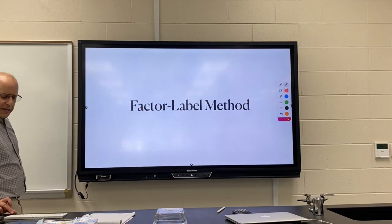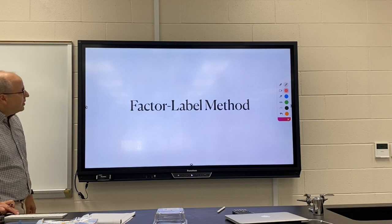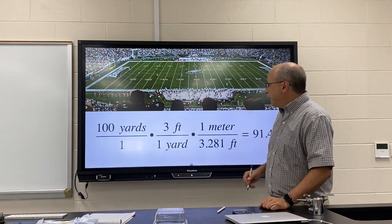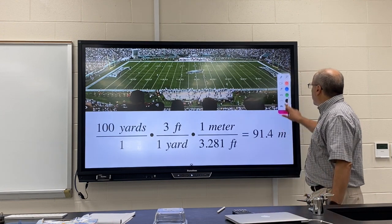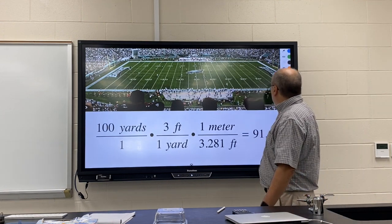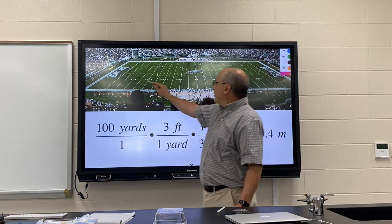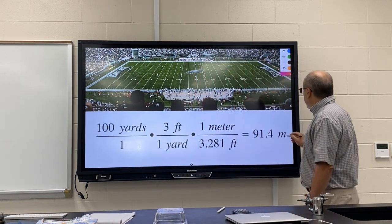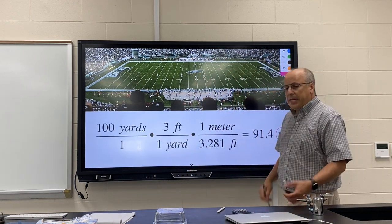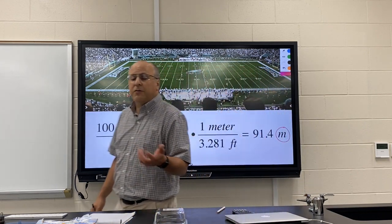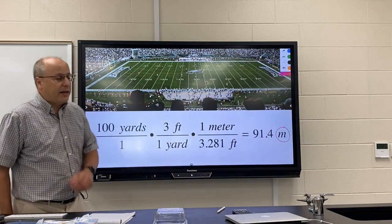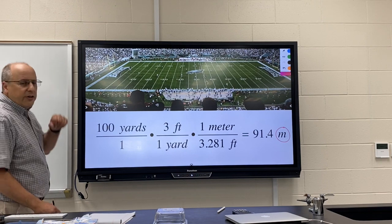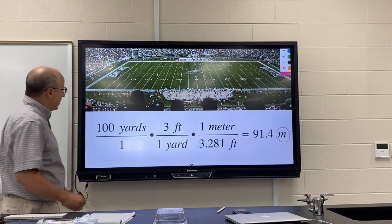This is something you've already learned in chemistry, so we're going to go through it really quick just to make sure it's fresh in your head. Let's imagine we're at an Eagles game and we know that from goal line to goal line is 100 yards. Let's say we want to convert that to meters to tell someone who is not from America, because they're not really familiar with yards. Here's how the factor label system works.